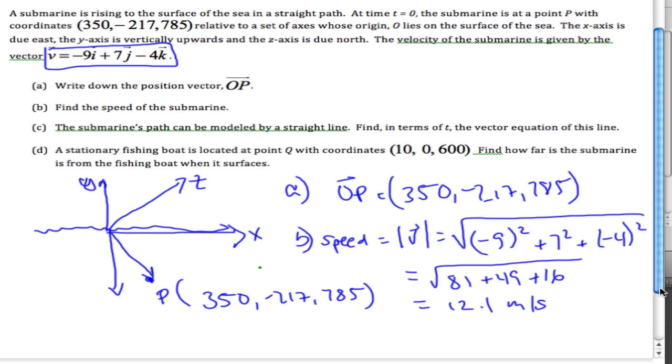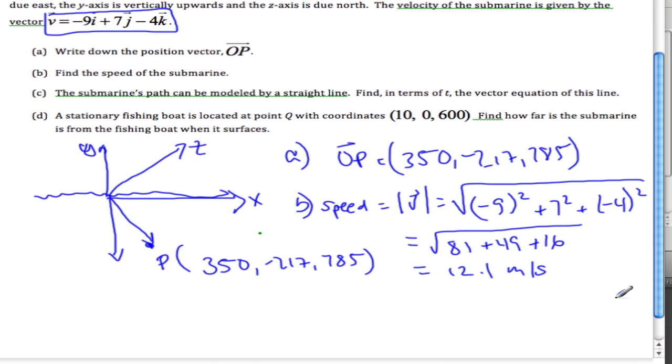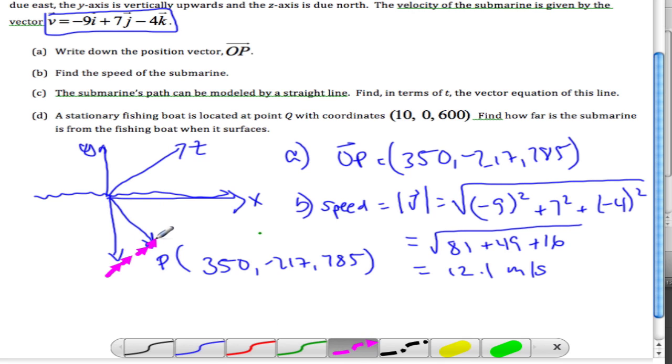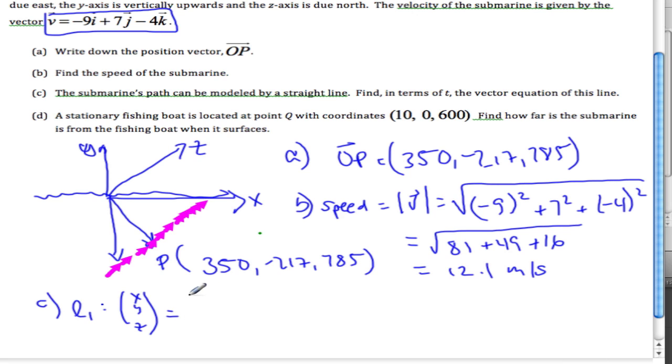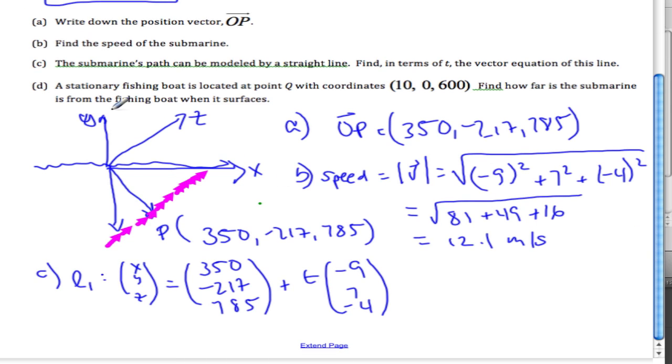Now it says the submarine's path can be modeled by a straight line coming out of the water. My vector equation of the line is (x, y, z) equals my starting point P, which is (350, -217, 785), plus t times my direction vector, the velocity vector (-9, 7, -4). This is the straight line modeled in terms of t.